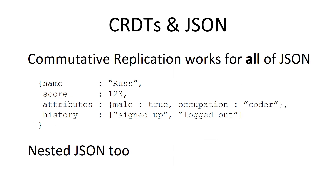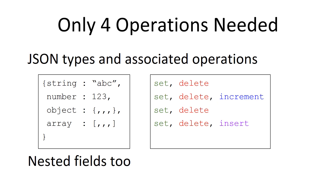Now I'm going to make a bold assertion: commutative replication can work for all of JSON — that means for numbers, strings, objects, and arrays, including nested JSON. And another assertion is that once you have the base operations of set, delete, increment, and insert, you can build higher-level operations on all of JSON. Basically these four data types on the left side and these four operations on the right cover all of JSON.